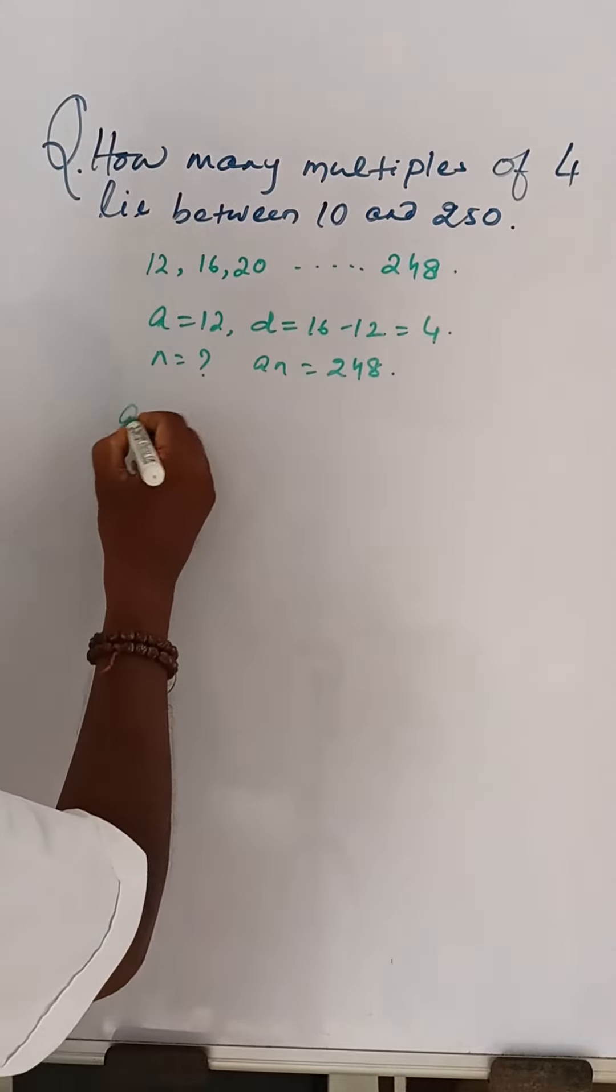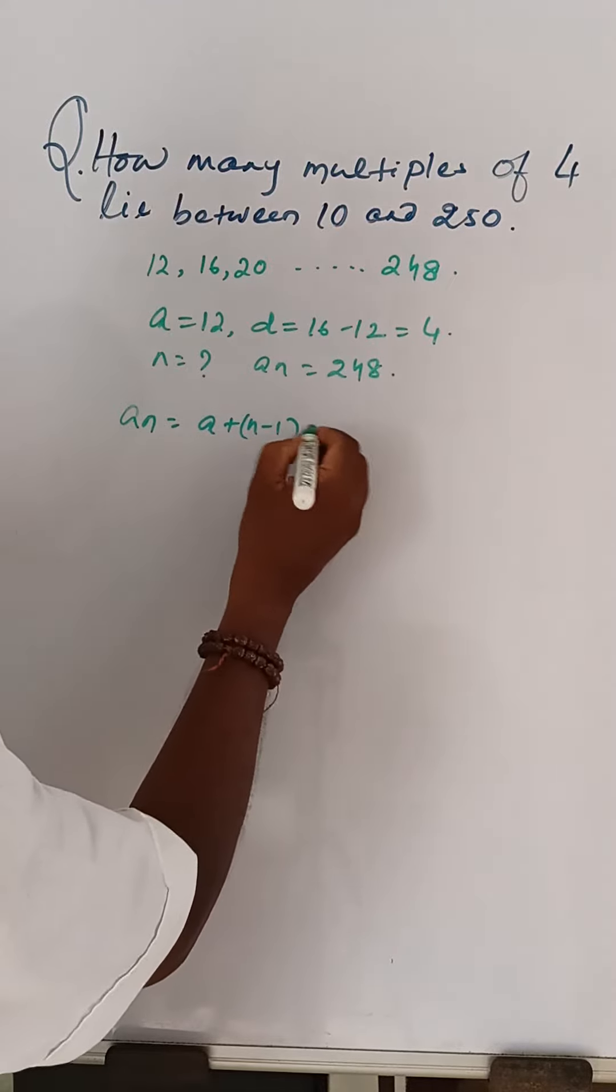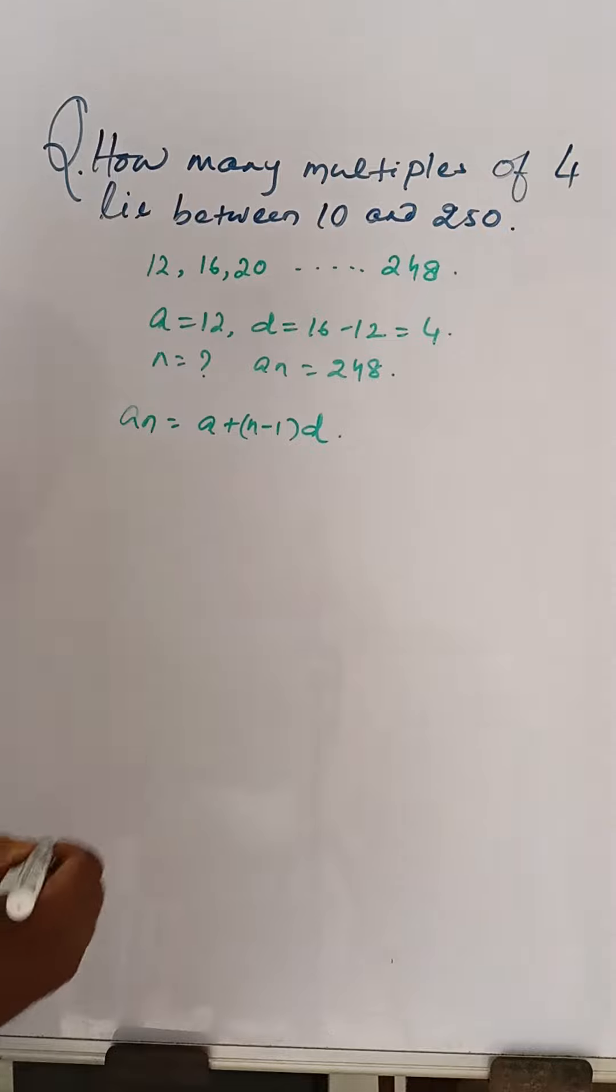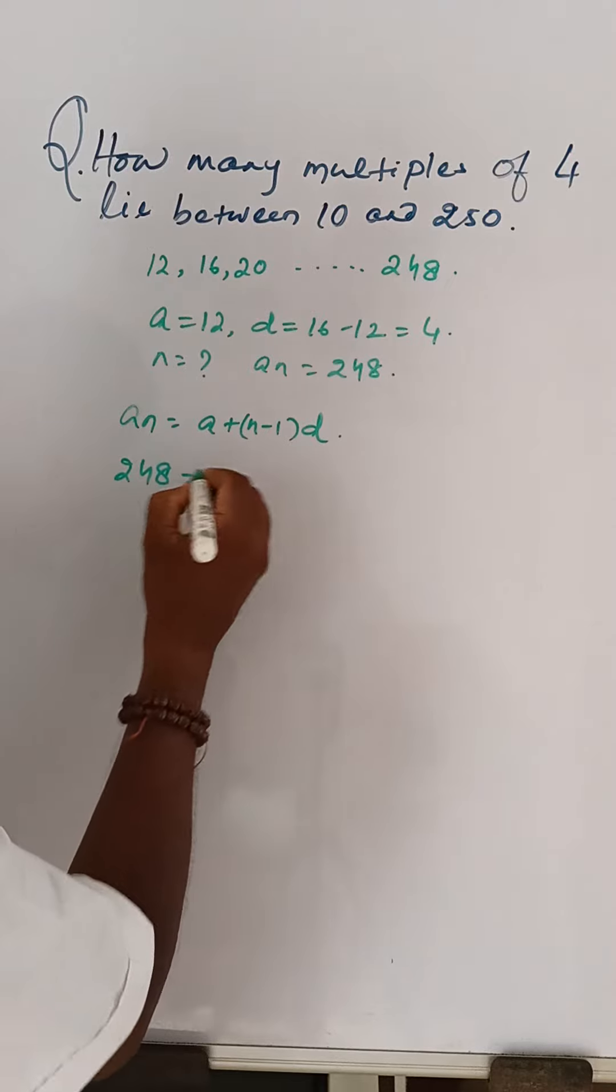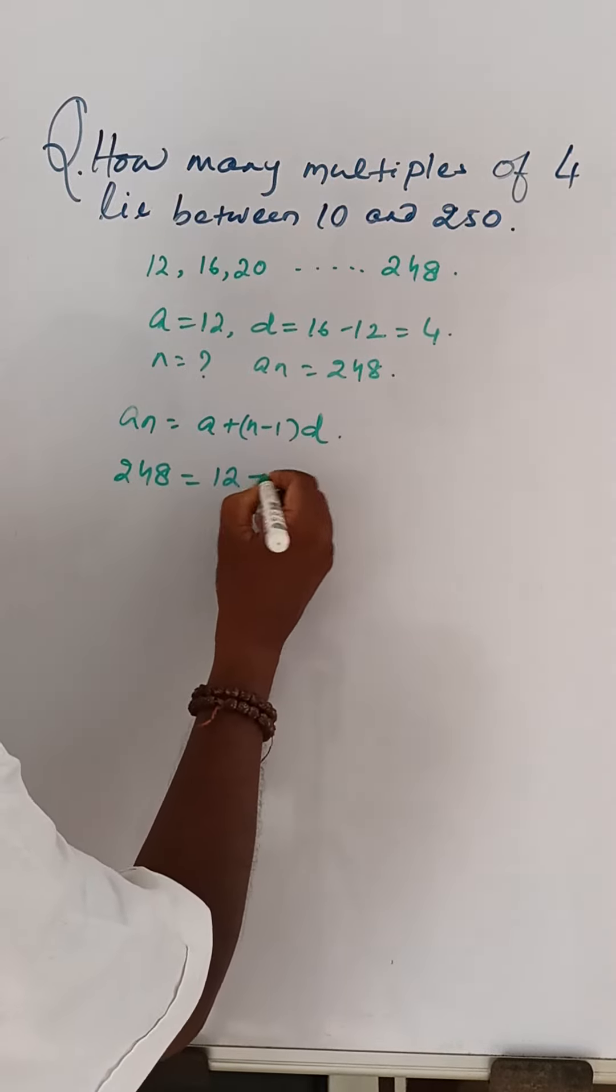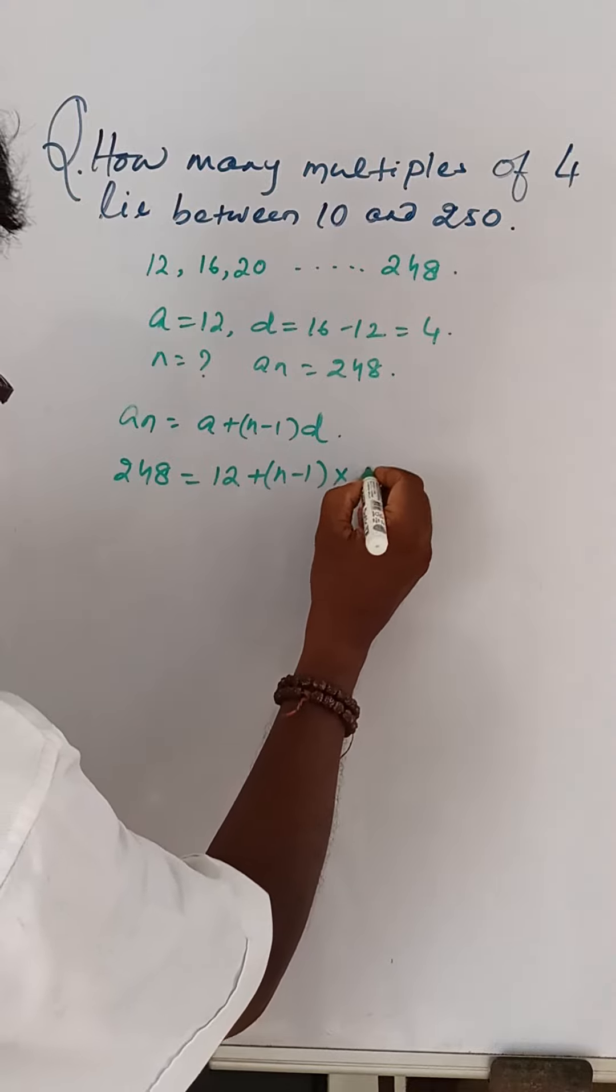Then, AN is equal to A plus N minus 1 into D, the given formula. So, 248 is equal to 12 plus N minus 1 into 4.